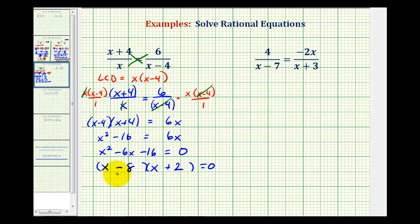So the values of x that make these factors equal to zero are x equals 8 from this factor, or x equals negative 2 from this factor.